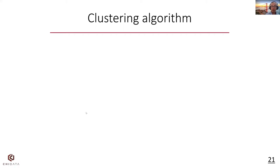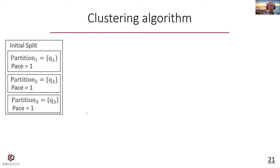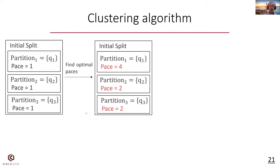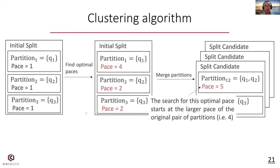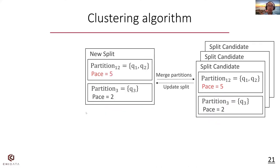We design a clustering algorithm. The initial split is that each partition includes only a single query and the pace is set to 1. Then we increase the pace of each partition to find the optimal pace that meets the local final work constraints. We then consider merging a pair of partitions that reduces the most local total work, iterate all split candidates, and choose the one that reduces the most local total work. Based on the monotonicity, when we search the optimal pace for a newly merged partition, the search starts from the larger pace of the original pair of partitions — in this example, starting at 4. We repeat this process until merging partitions cannot further reduce the local total work.